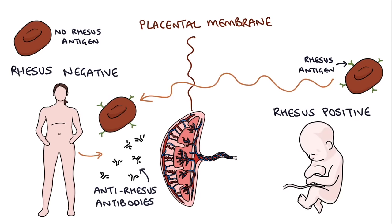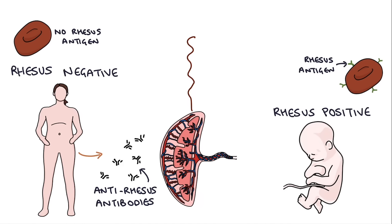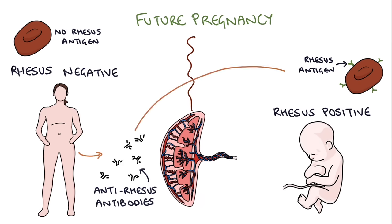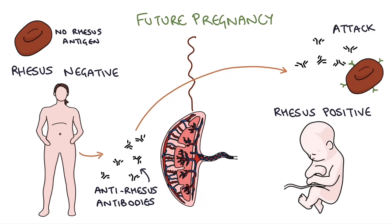Usually this doesn't have much of an impact at the time because the mum will just destroy the blood cells that have got into her system. But in future pregnancies, the antibodies the mum has developed will be able to cross the placental barrier — because they're only very small proteins — and get into the baby's bloodstream, starting to attack the baby's blood cells.